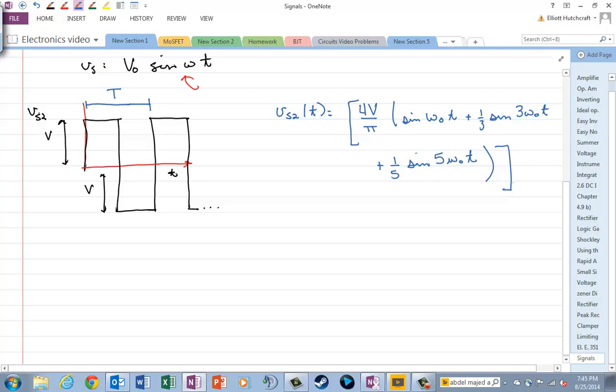So that omega-naught is the, just to make sure it's clear, maybe I should call this T-naught, so T-naught is one over F-naught, and omega-naught is two pi F-naught. So we have that omega-naught, which we will call the fundamental frequency, and then we have the odd harmonics of that fundamental frequency.